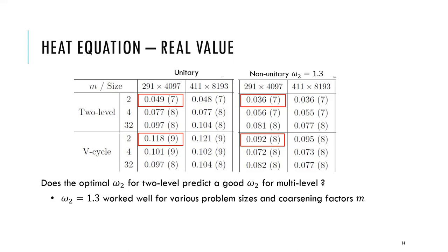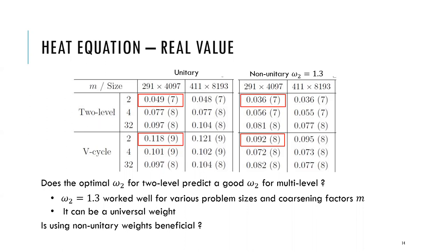In fact, omega_2 equal to 1.3 worked well for various problem sizes and coarsening factor M. In this case, this can be a universal weight. Since we have better results for non-unitary weights, using non-unitary weights is beneficial, and we could save about 10 to 14% of iterations.